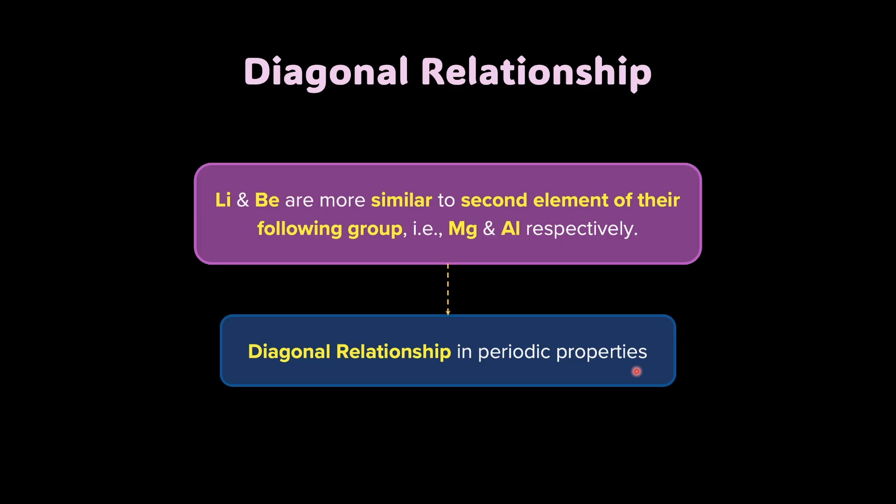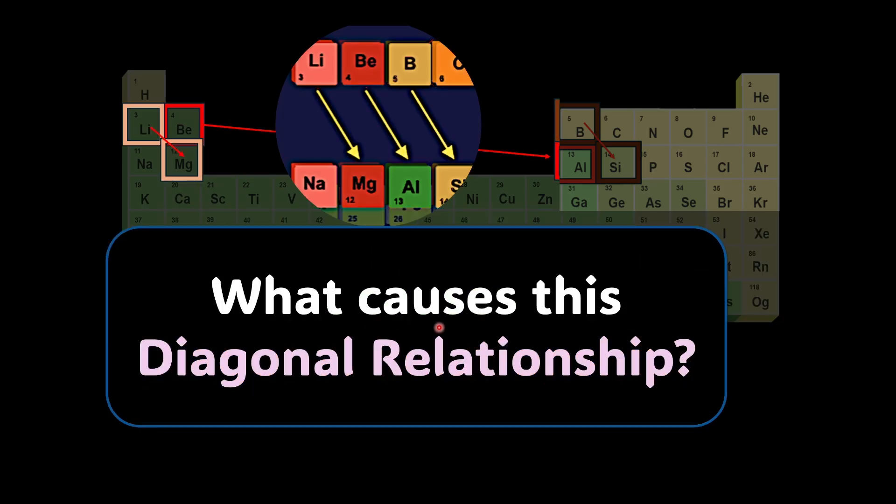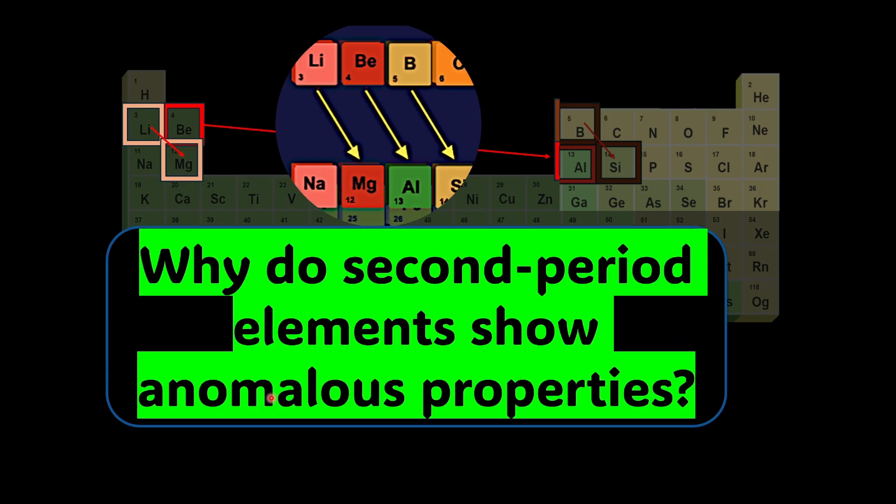Now, this leads to two questions. Question number one, why do second period elements show anomalous properties? So, why does the first element in s and p block groups show different chemical behavior from the rest of the group members? Why this anomalous behavior? And the second question is, what causes this diagonal relationship? So, if lithium is not trying to follow the properties of the rest of the group members, and beryllium is also acting differently in second group, but then why is there a diagonal relationship? Legit questions. Let's address both the questions one by one. Let's start with the first question.